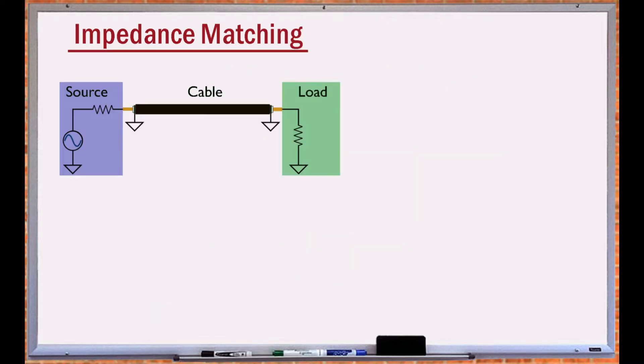An impedance mismatch can happen whenever the signal medium changes. For example, when the source is connected to the cable or at the load. These mismatches cause reflection and signal loss.